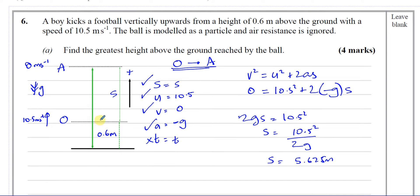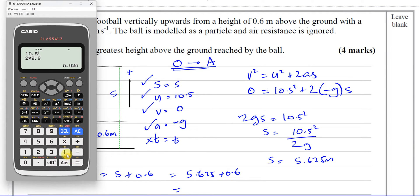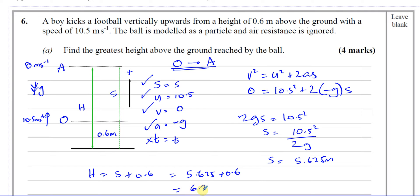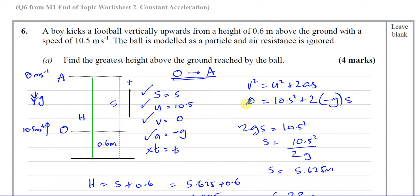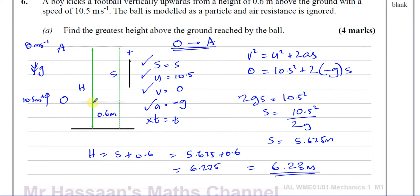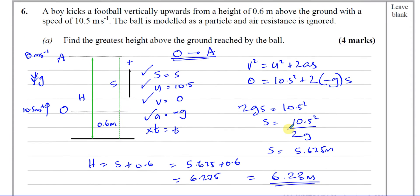5.625 meters is not the final answer, because we want the height above the ground. So the height above the ground H = S + 0.6 = 5.625 + 0.6 = 6.225 meters. We round to 3 significant figures — Cambridge always uses 3SF, and Edexcel accepts 2SF or 3SF. So the greatest height above the ground is 6.23 meters. Note that 5.625 is the height above where it was projected from — you must add 0.6.